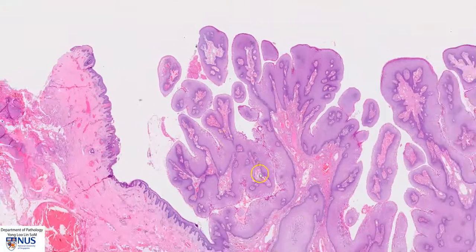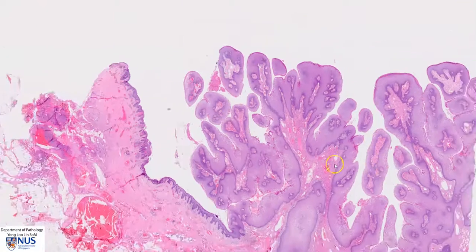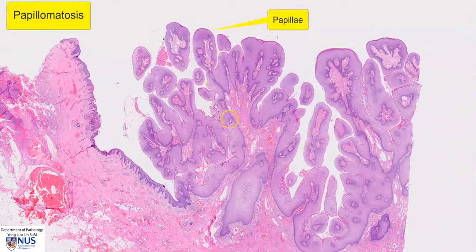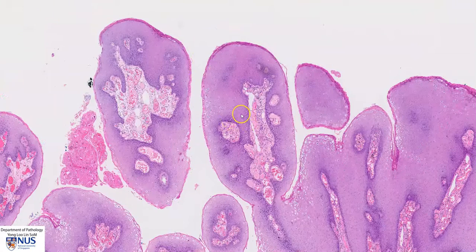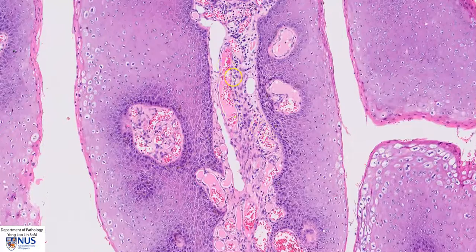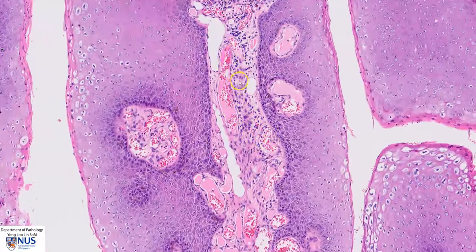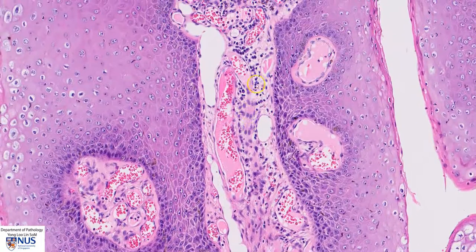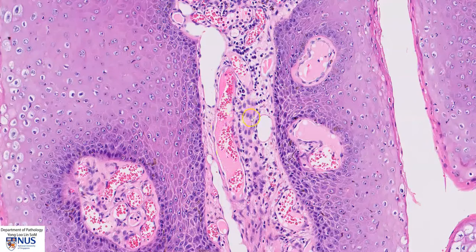In this abnormal area, we see many of these finger-like projections — these are papillae, so we have papillomatosis, or many papillae. Each papilla is composed of a fibrovascular core covered by epithelium. Here is the fibrovascular core, where we can see fibrostroma along with some chronic inflammatory cells — lymphocytes and plasma cells — and blood vessels containing red blood cells, hence fibrovascular core.